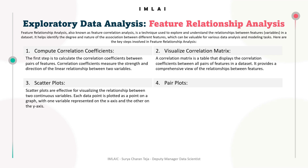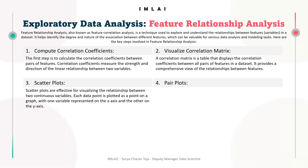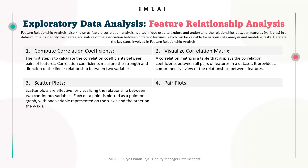Then we have pair plots, also known as scatter plot matrices. Pair plots display scatter plots for all pairs of features in a dataset, allowing for a visual examination of the relationships between multiple features simultaneously. They are particularly useful when dealing with a moderate number of features, as they provide an overview of the interactions between variables.